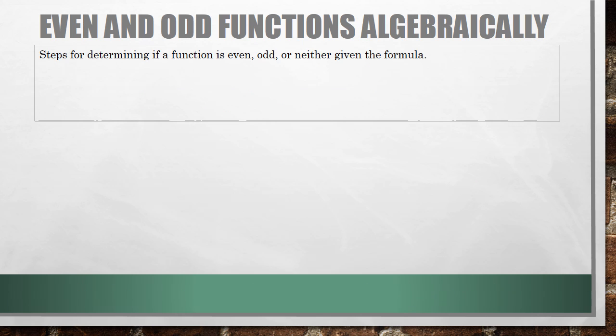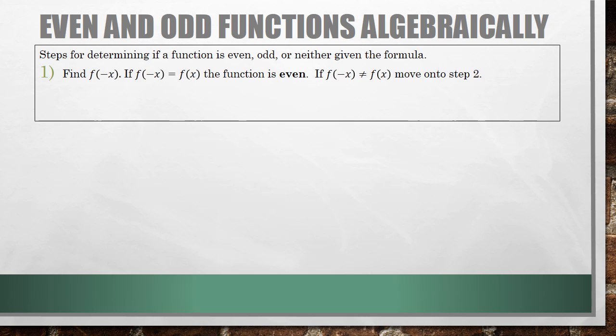There are three steps we can follow to determine if a function is even, odd, or neither when given a formula — this is how you determine if functions are even or odd algebraically. Step 1: find f of negative x. If f of negative x equals f of x, you're done — the function is even. However, if it does not equal f of x, then we have to move on to step 2.